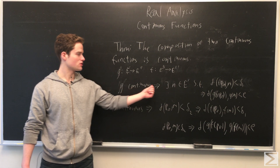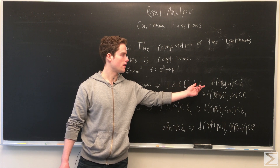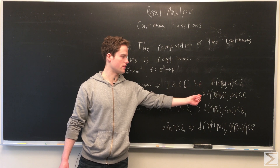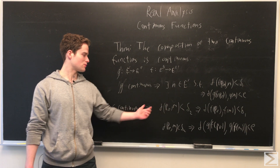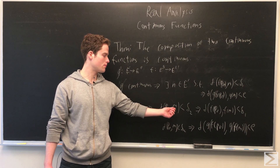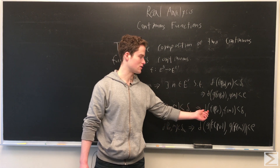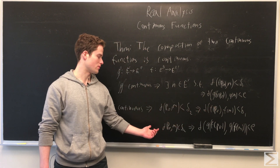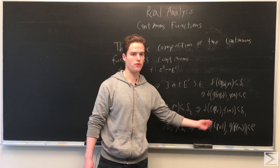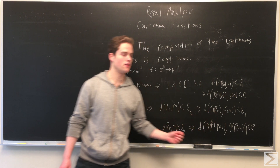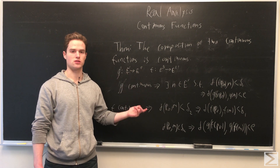Specifically, G is continuous, so we can find some N in E prime such that when the distance between F of P-naught and N is less than delta 1, then the distance between the images of those points is less than some epsilon. Since F is continuous, we can find M such that the distance between P-naught and M is less than delta 2, which implies the distance between the images is less than delta 1. This in turn implies when the distance between P-naught and M is less than delta 2, the distance between G of F of P-naught and G of F of M will be less than epsilon. So the composition satisfies the definition of continuity.